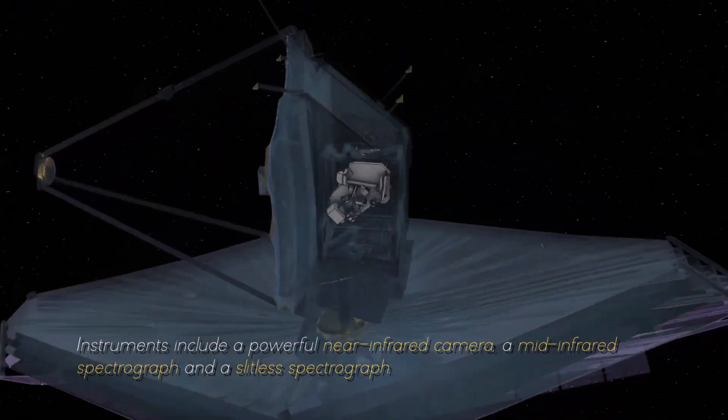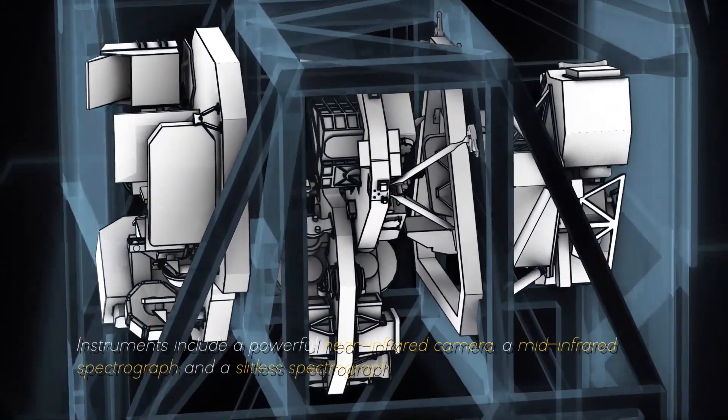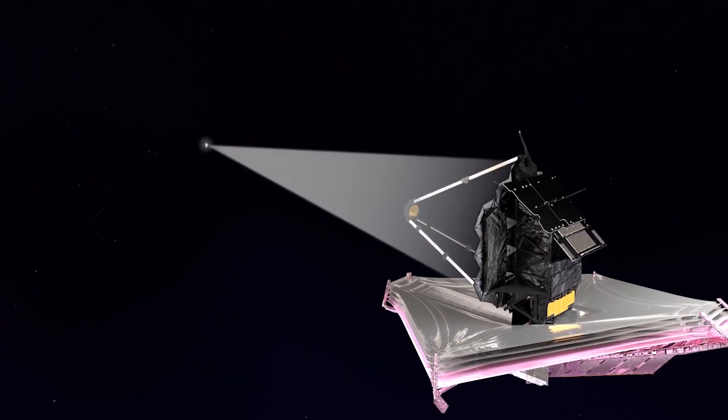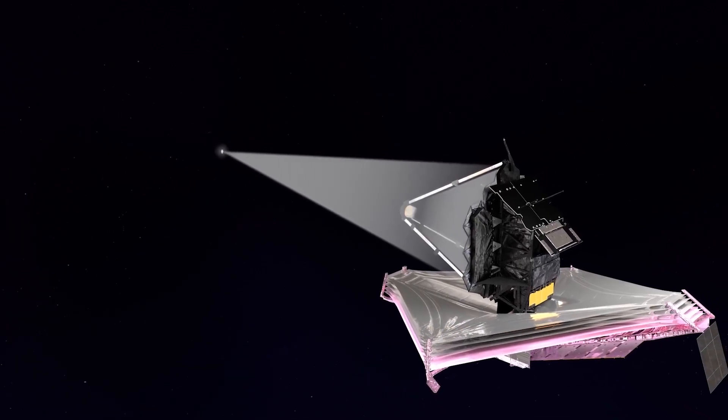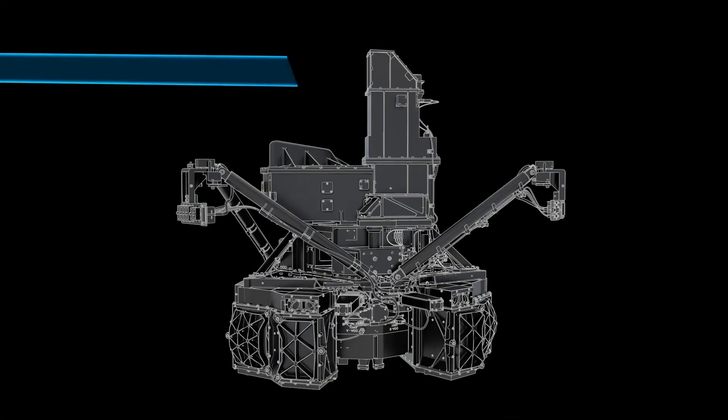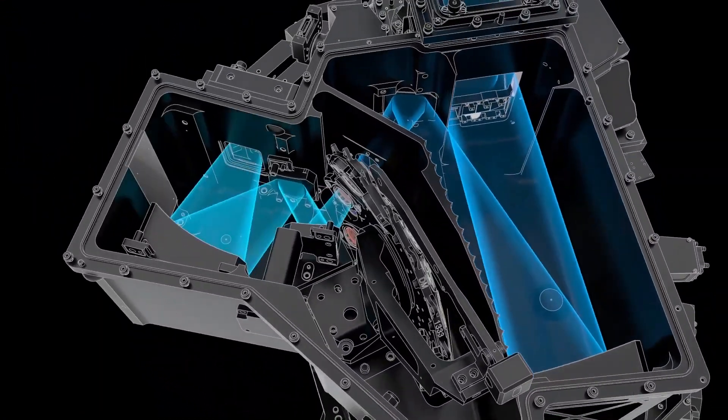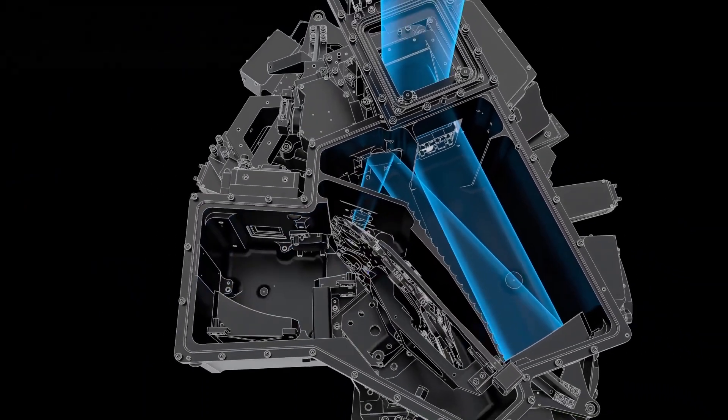This allows the JWST to collect and focus light from distant celestial objects with unmatched precision and sensitivity. Instruments include a powerful near-infrared camera, a mid-infrared spectrograph, and a slit-less spectrograph. These instruments work together to capture images, measure spectra, and study the properties of objects ranging from the oldest galaxies to the planets of our solar system.